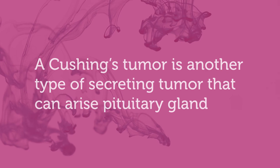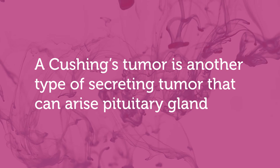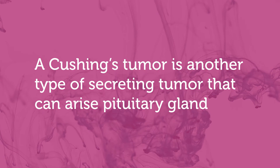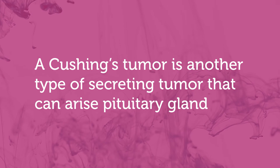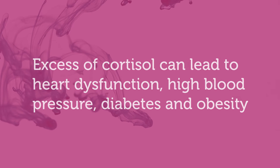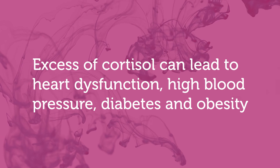A second type of secreting tumor is called a Cushing's tumor. This tumor overproduces a hormone called ACTH, which controls the levels of cortisol in the body. This excess of cortisol can lead to a number of significant problems, including heart dysfunction, high blood pressure, diabetes, and obesity.